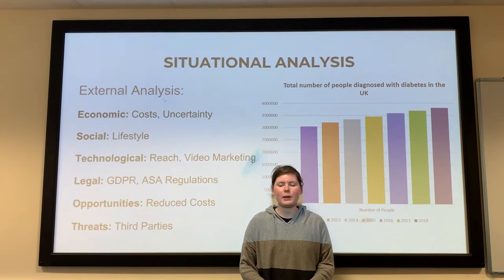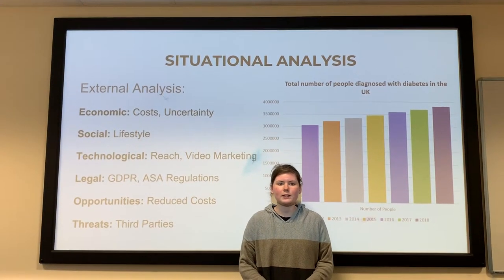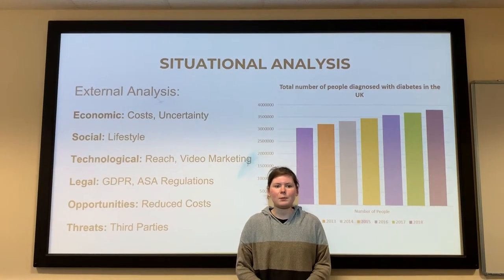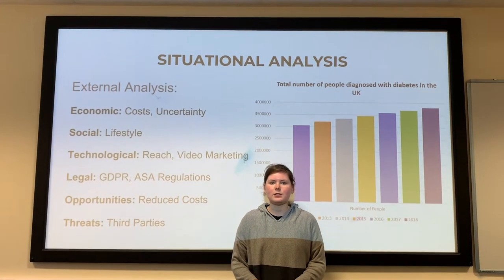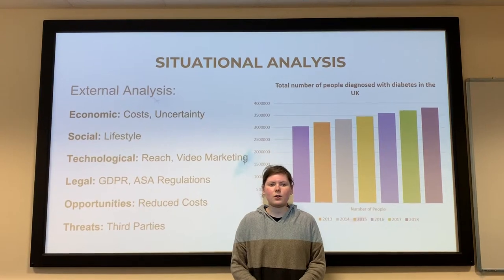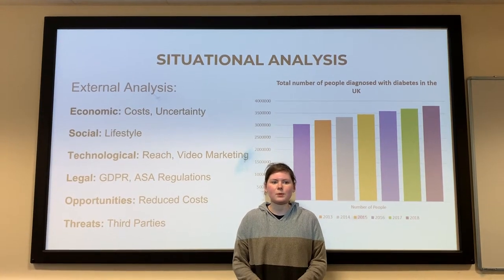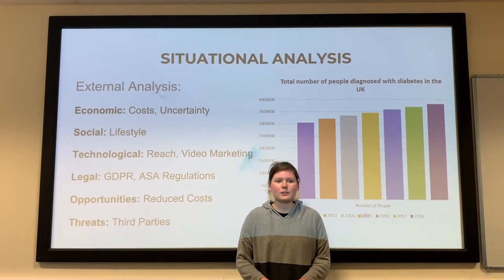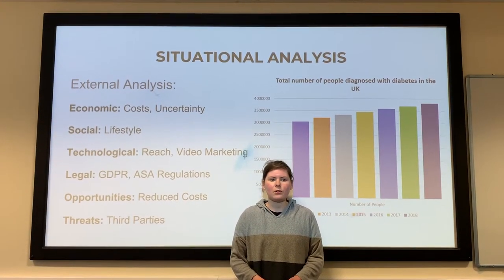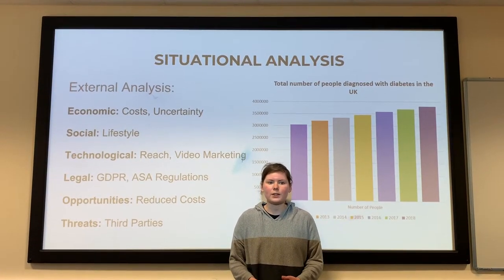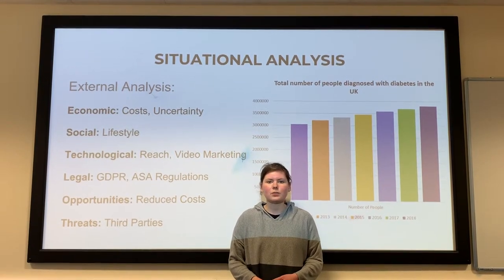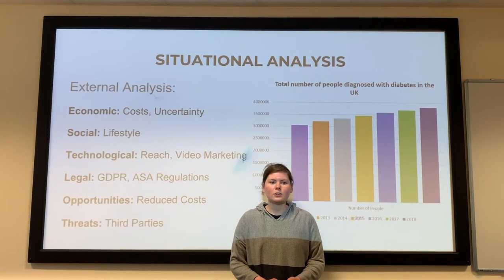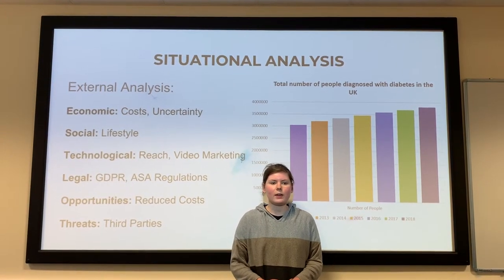More than half of the adult population are obese or overweight, and this is a significant factor in the prevalence of diabetes. According to Diabetes UK, 80% of someone's risk of developing type 2 diabetes is due to obesity. Furthermore, few people are diagnosed before the age of 40, which demonstrates that the disease is preventable and that costs are only likely to increase without intervention.